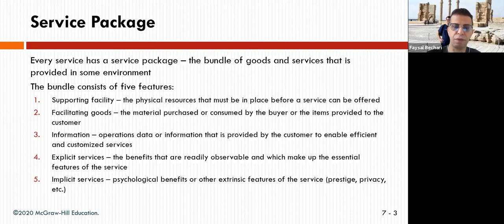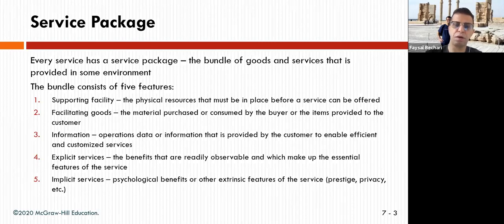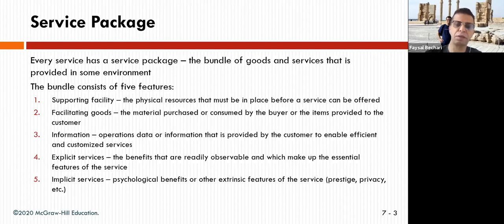The bundle usually consists of five things: supporting facilities, facilitating goods, information, explicit services, and implicit services. Supporting facilities are the physical resources that must be in place before a service can be offered — like an office or a place for examining patients.